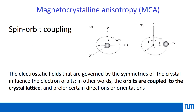To summarize: for spin-orbit coupling, which is a relativistic interaction, the electrostatic fields governed by the symmetries of the crystal influence the electron orbits, and orbits are coupled with the crystal lattice — meaning the crystal structure becomes important. The magnetization therefore prefers a certain direction. So far we have looked at the origin of magnetocrystalline anisotropy in spin-orbit coupling, and the next question is how to actually calculate it and determine what value it will have for a given crystal structure or material.